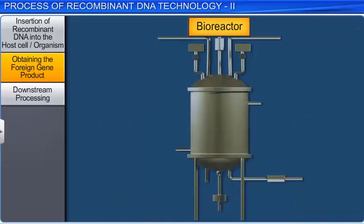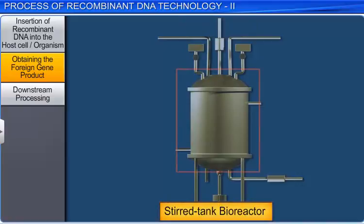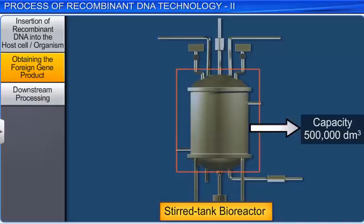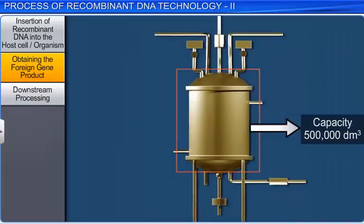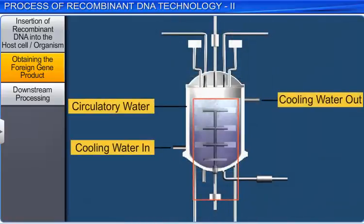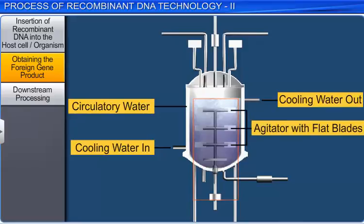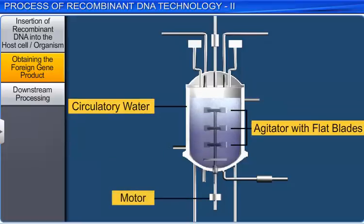The most commonly used bioreactor is the stirred tank type, which consists of a large stainless steel vessel with a capacity of up to 500,000 decimeter cube. Around the steel vessel is a jacket of circulatory water used to control the temperature inside the bioreactor. There is also an agitator inside the bioreactor, comprising a series of flat blades which can be rotated with the help of a motor. This ensures thorough mixing of the contents so that nutrients come in close contact with the microorganisms. The agitator also prevents settling of the cells at the bottom.